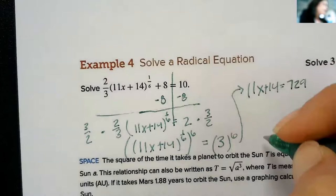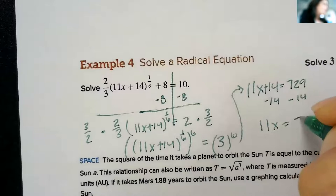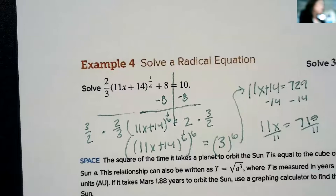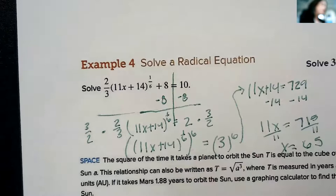Keep going, keep going, keep going. 11x equals 715. Divided by 11, x equals 65. If I plug that in, it's not going to give me a negative, so that is my answer.